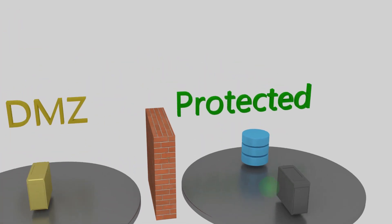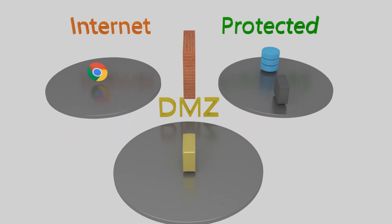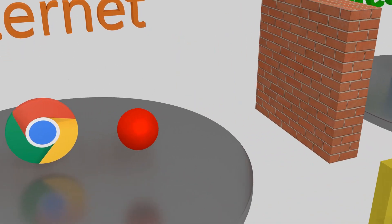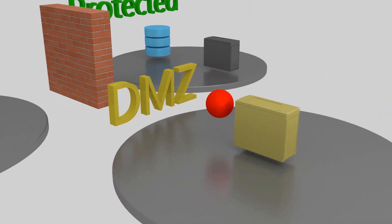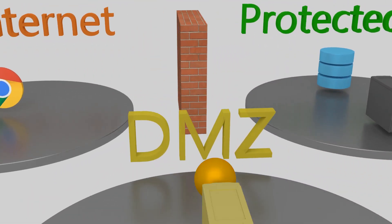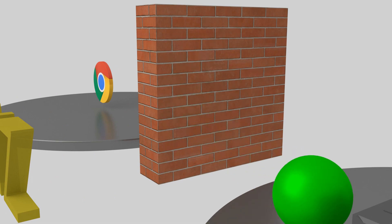The other alternative is to use a single firewall that has a connection into each of the three areas. It will use different rules depending on which two areas the traffic has been flowing between. When traffic comes in from the internet, it will pass through the firewall and be forwarded to the DMZ area. When traffic is sent from the DMZ, it will pass through the same firewall and be forwarded to the protected network.